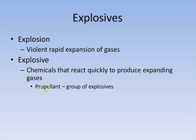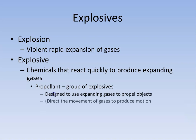Types of explosives: one type is a propellant. This is a group of explosives designed to use this rapid expansion of gas to move objects in a particular direction — think rocket engines. We're directing the movement of the gases to produce motion. We create this rapid expansion of gases, but we allow the gases only to leave one particular outlet, and it forces an object forward.